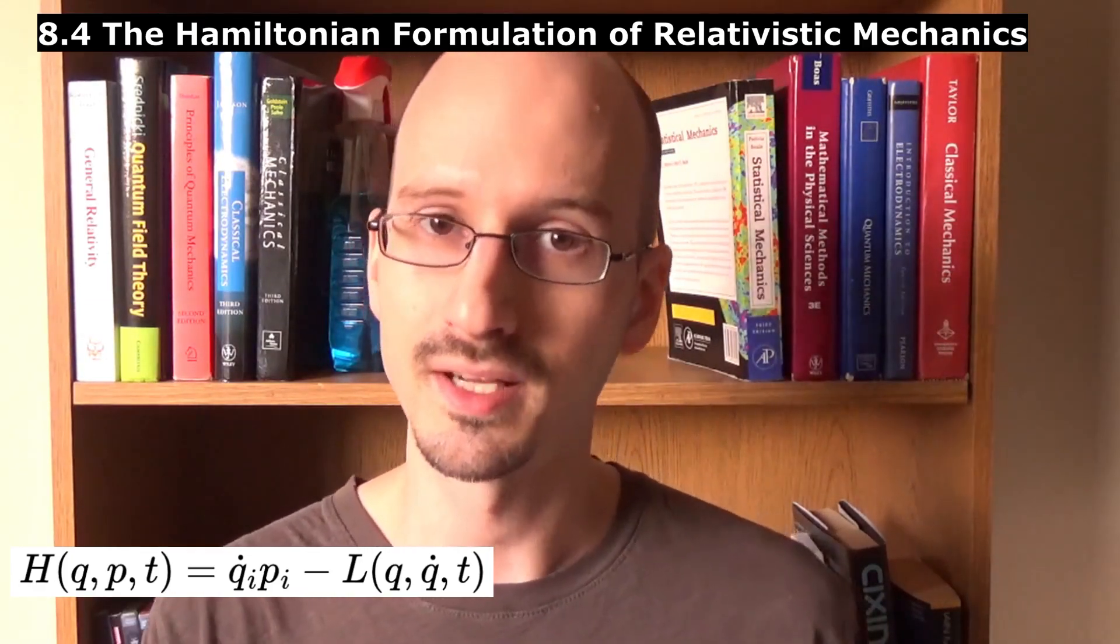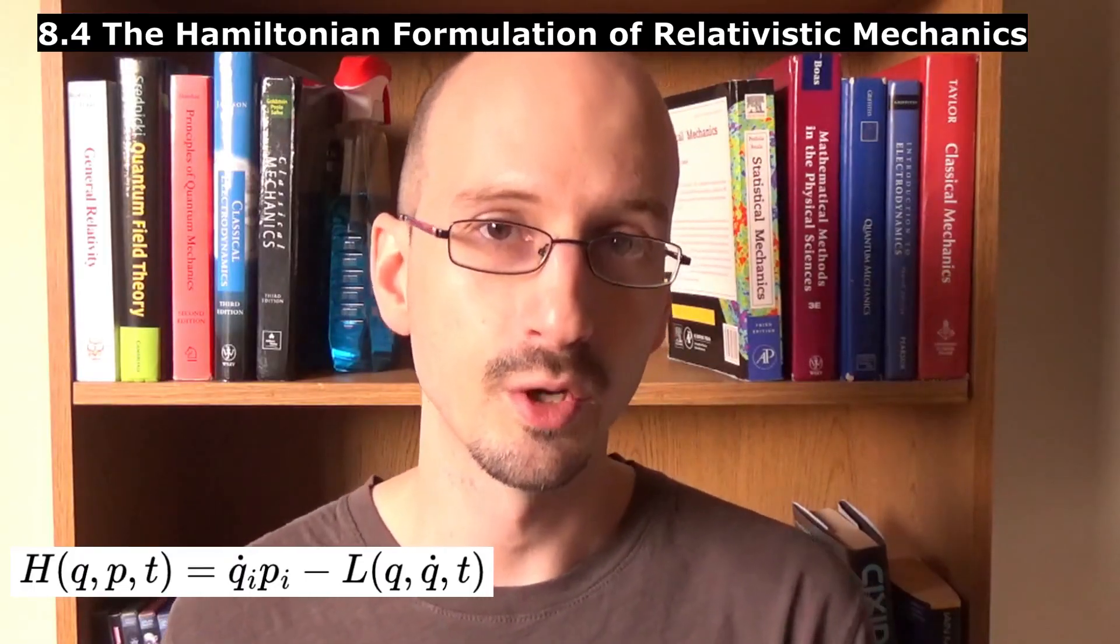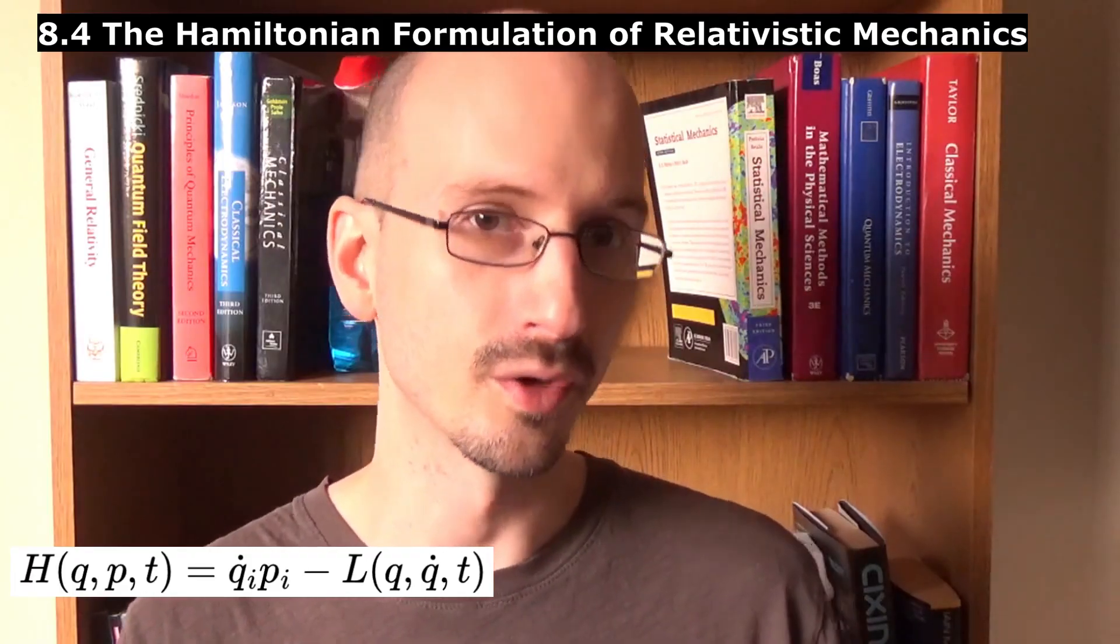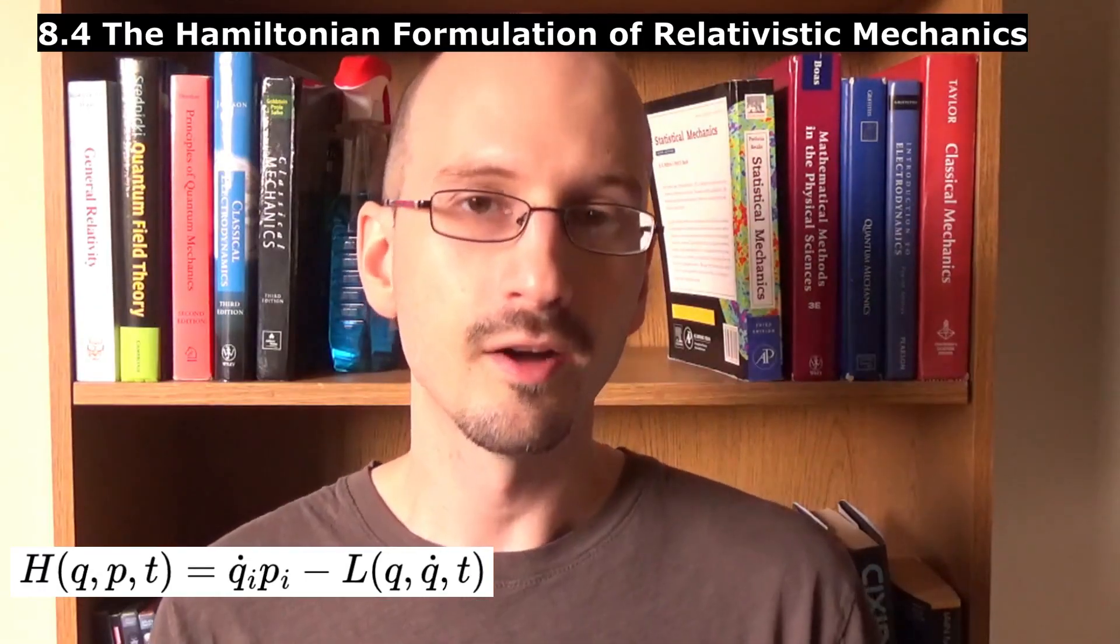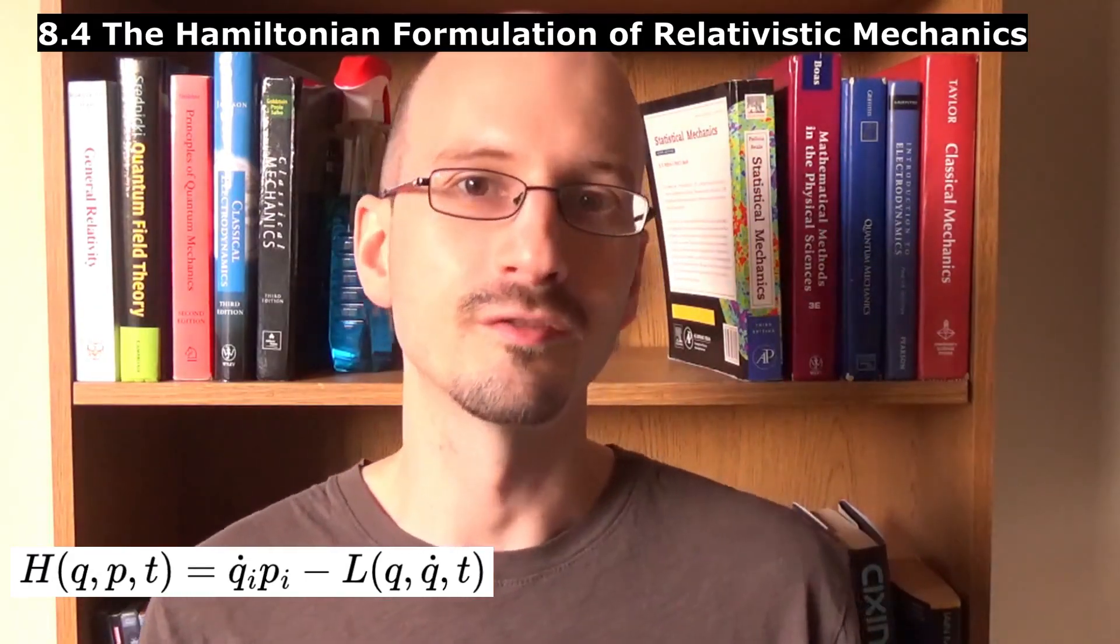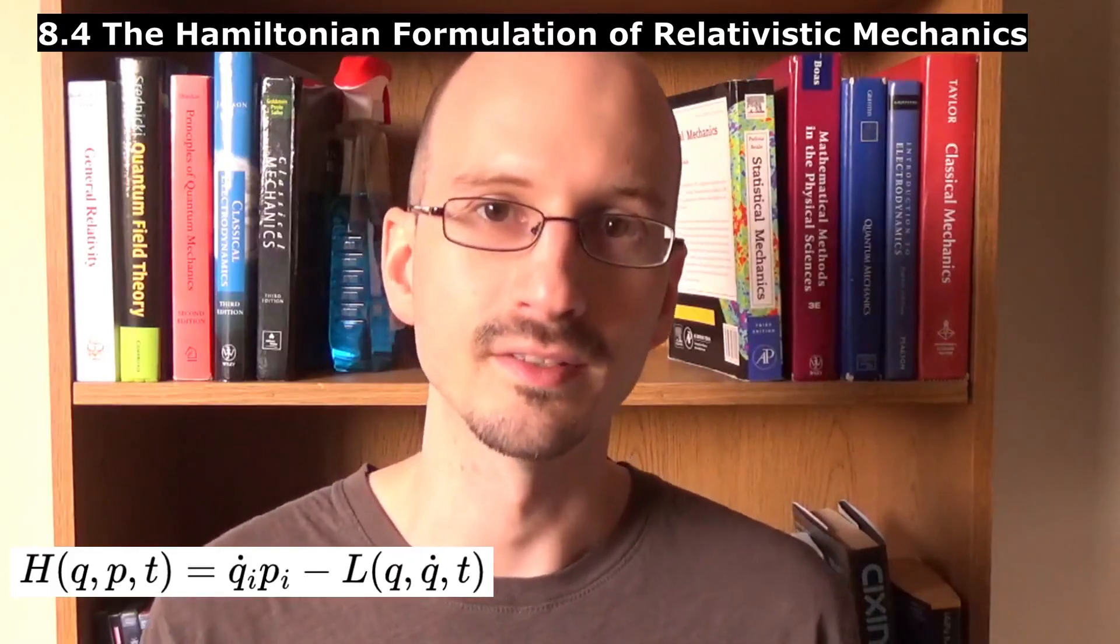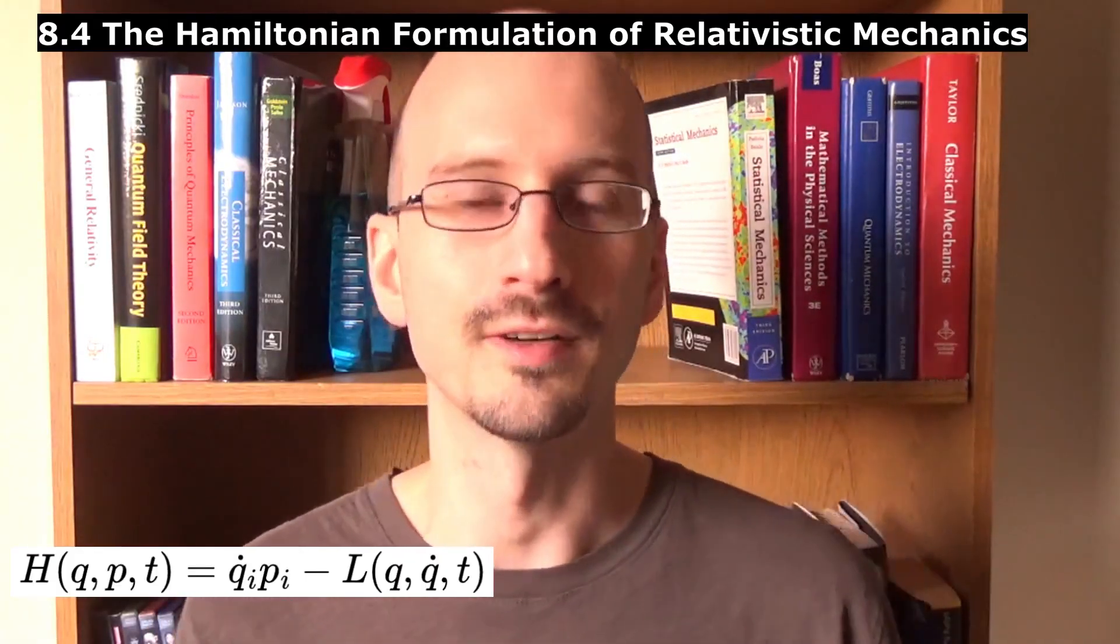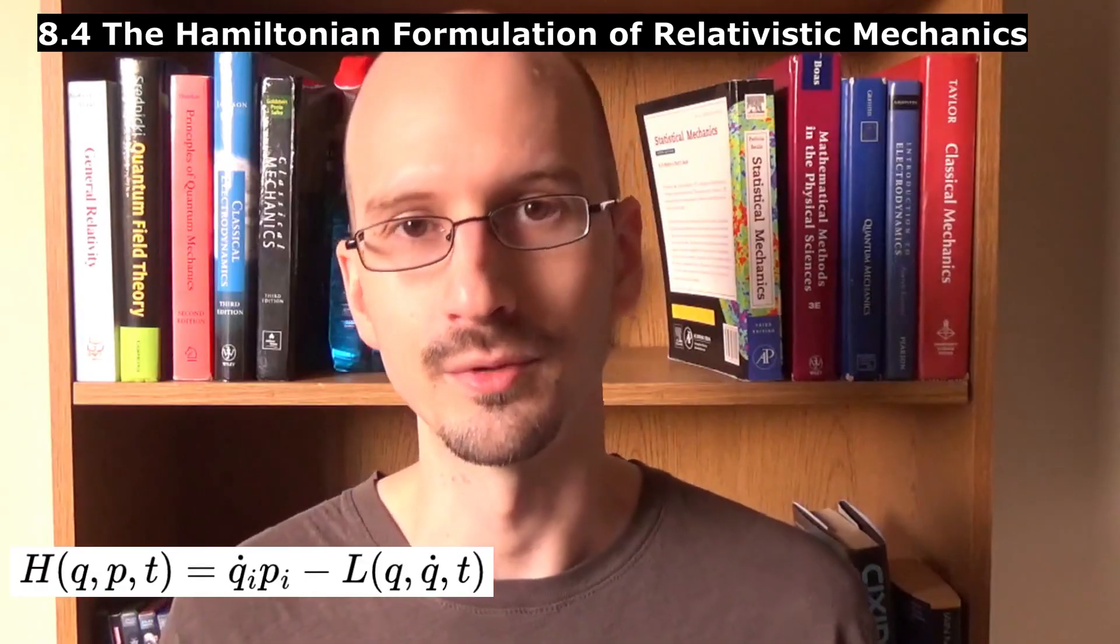The problem is with both Lagrangian and Hamiltonian is that it does not work categorically to say the Lagrangian is the kinetic energy minus the potential energy, and since the Hamiltonian relies on knowing the Lagrangian, finding the Hamiltonian is just as hard. So often we'll have to start with the equations of motion, which we find out experimentally, and work backward to find a suitable Lagrangian or Hamiltonian.